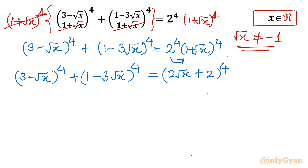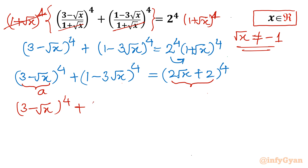Let me consider the first bracket as a and the second bracket as b. Once I add a plus b it is not matching with our RHS, so some manipulation is required. Because the powers are even, I can take minus common from the second bracket, giving (3 root x minus 1) whole power 4. Since the power is even, it won't affect the equation.